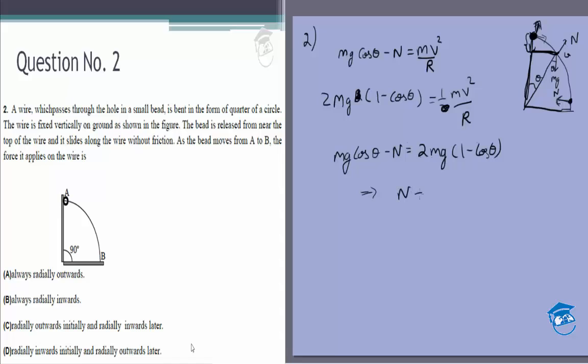Which gives us N is equal to, this is 2mg and this is 3mg cos theta, so 3mg cos theta minus 2mg.